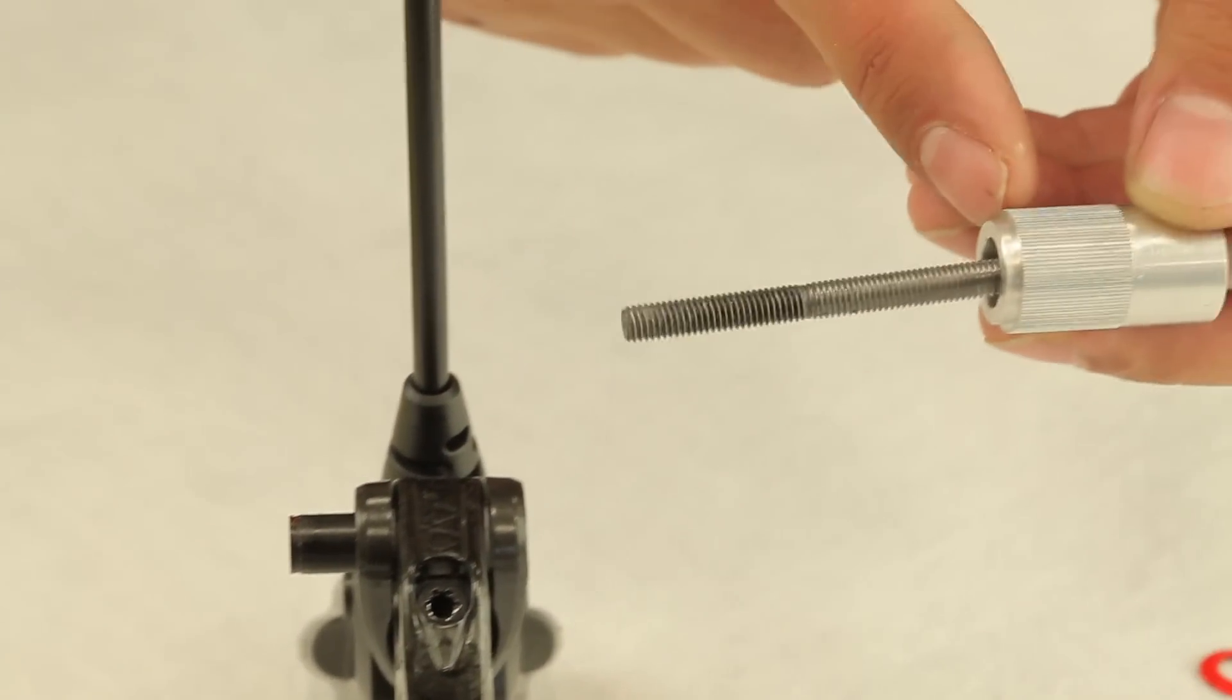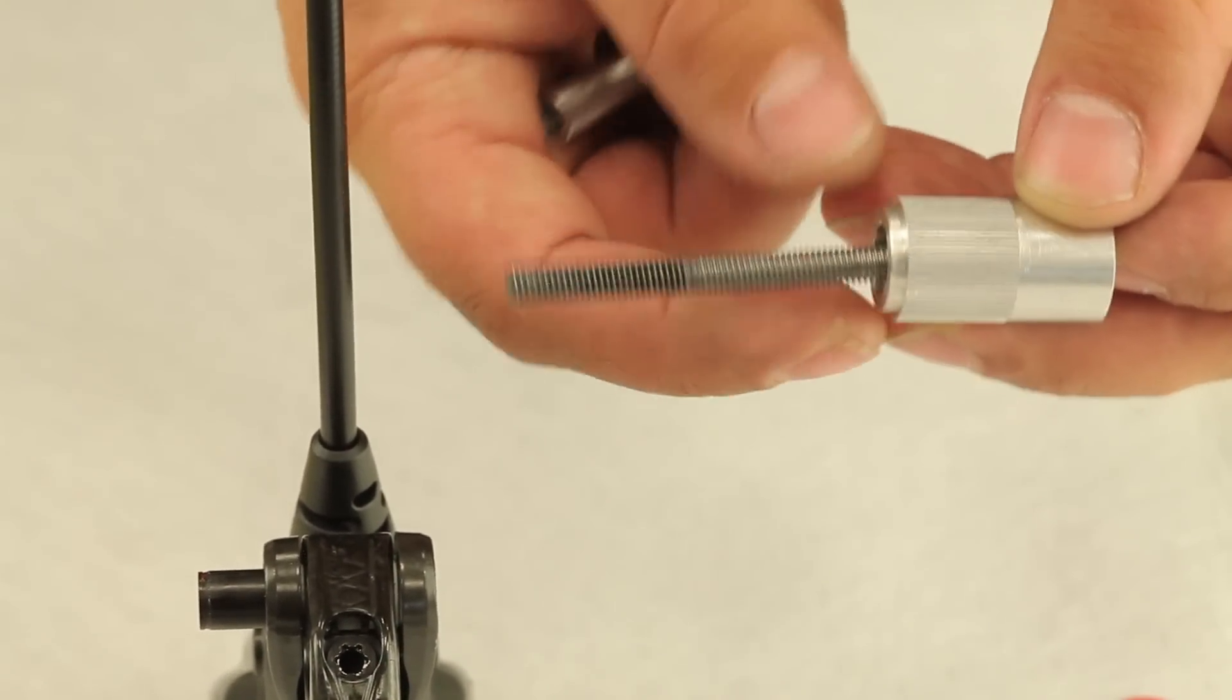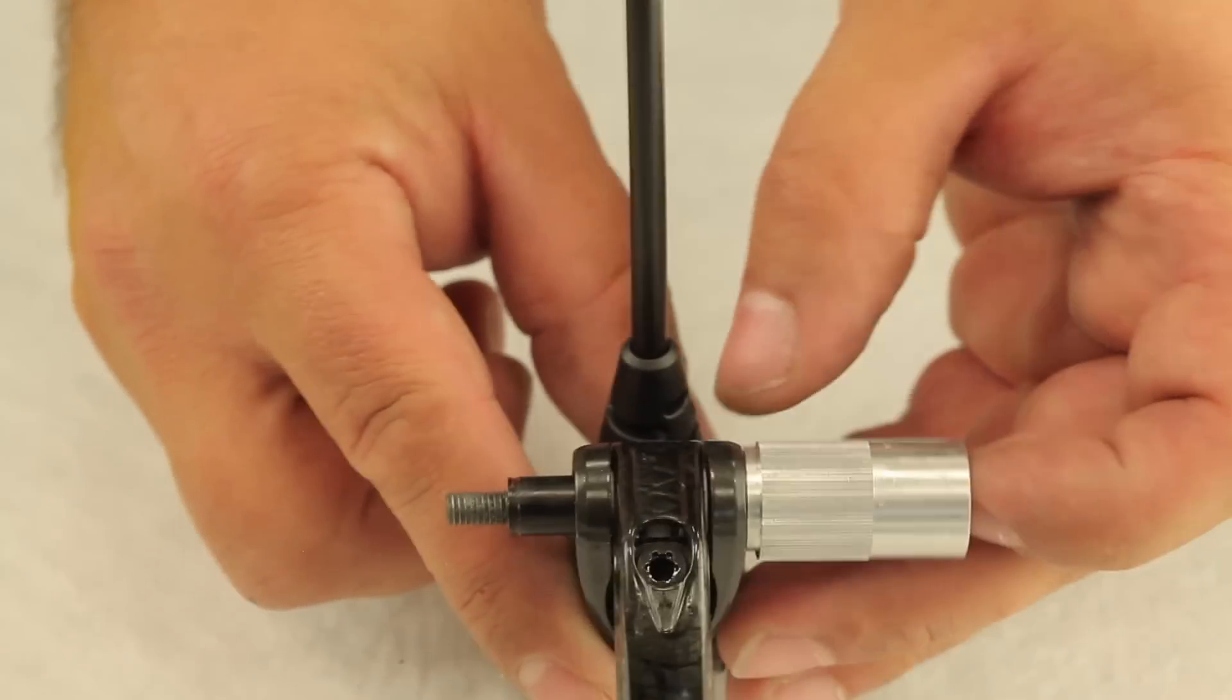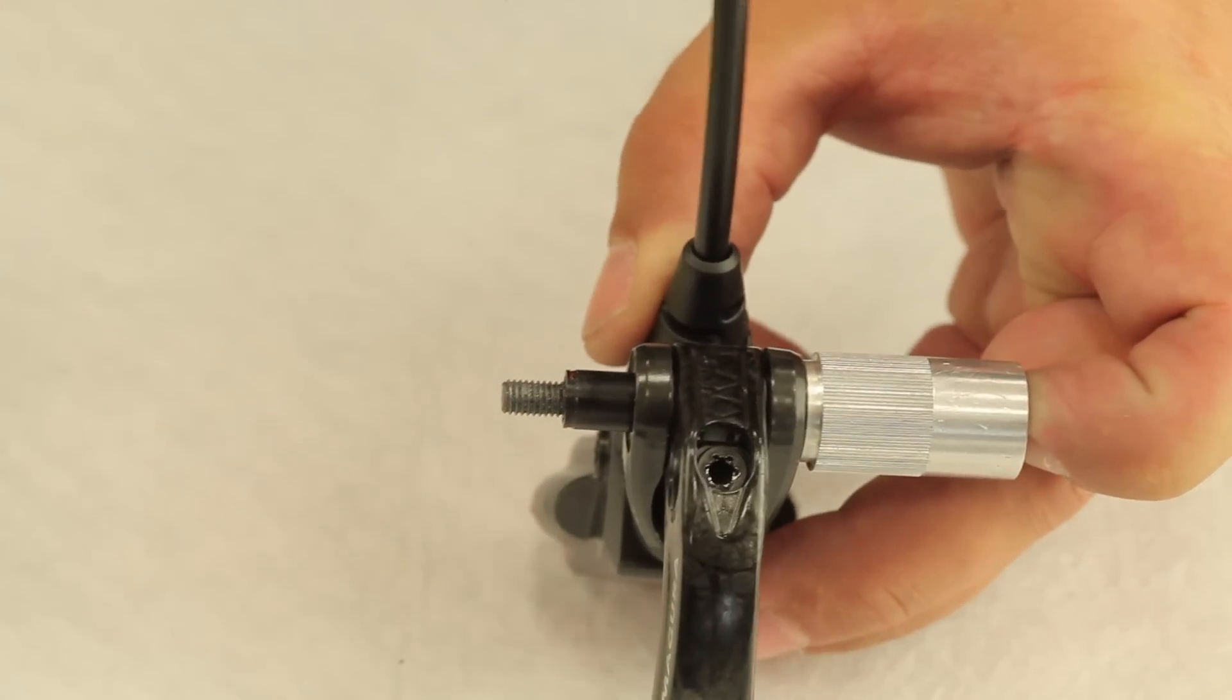To completely set the hollow bolt use the tool again, this time pointing the reduced diameter surfaces towards the housing and use it to push the hollow bolt in.